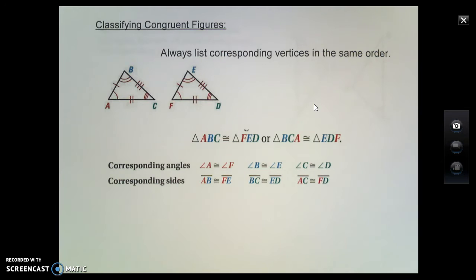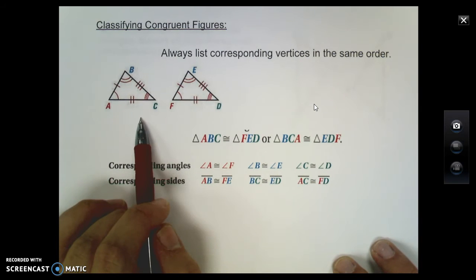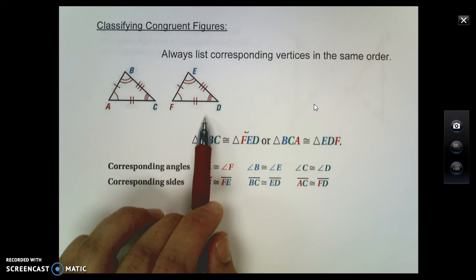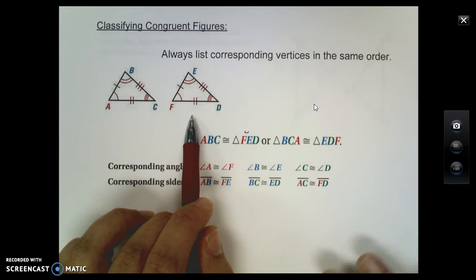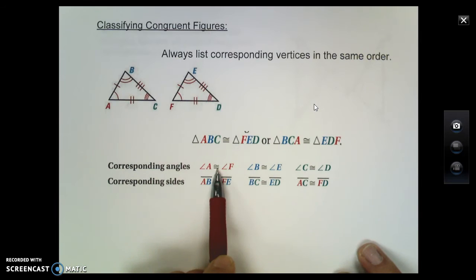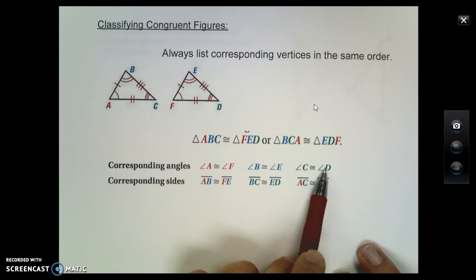So in order to classify congruent figures, the first thing we need to know is that all corresponding parts of the shapes need to be congruent to each other. So in this drawing we have below, we have two triangles, triangle ABC and triangle FED. What I look at here is these two shapes are congruent because I have three pairs of corresponding angles that are all congruent.